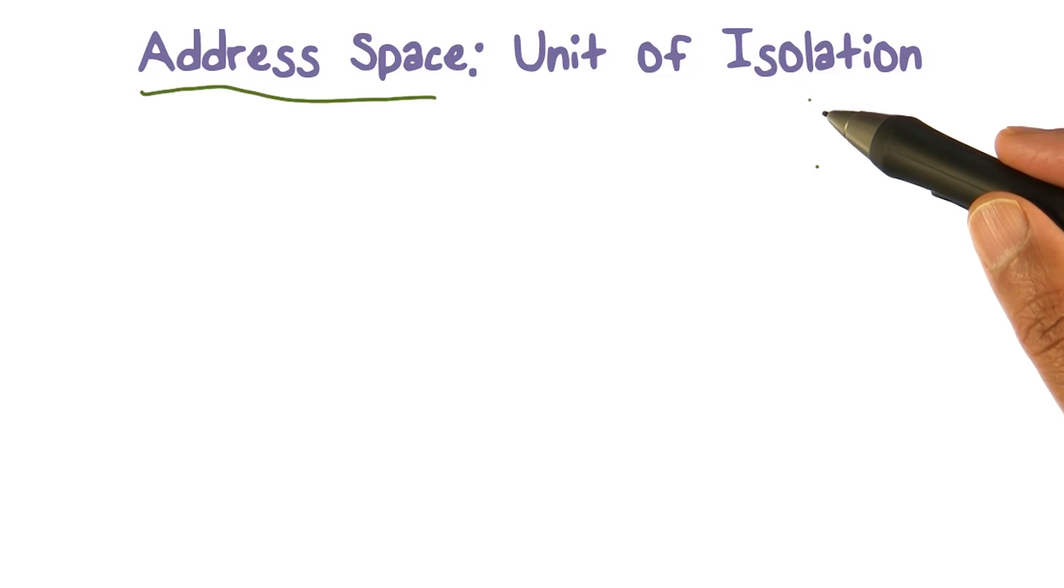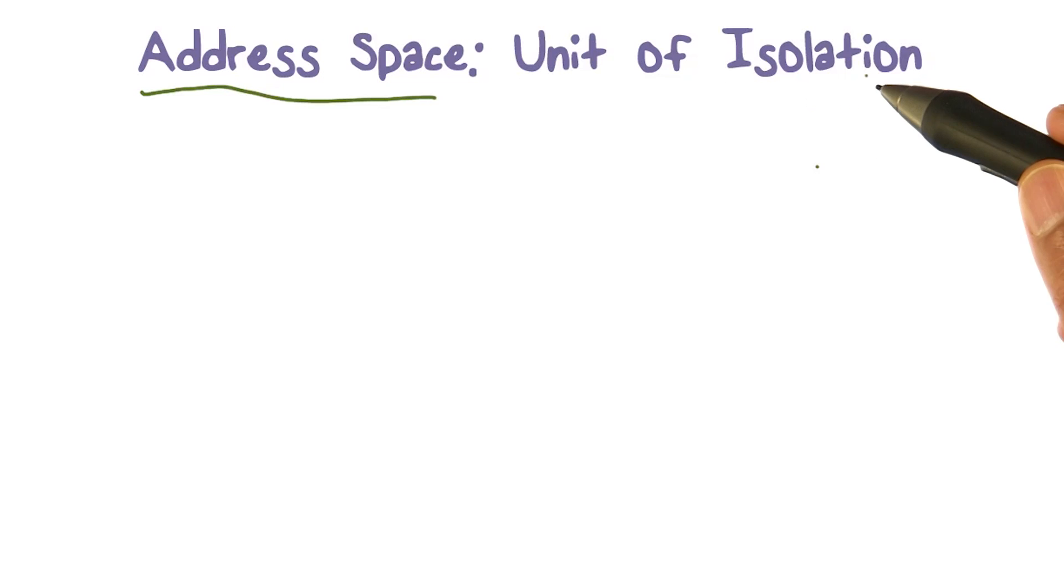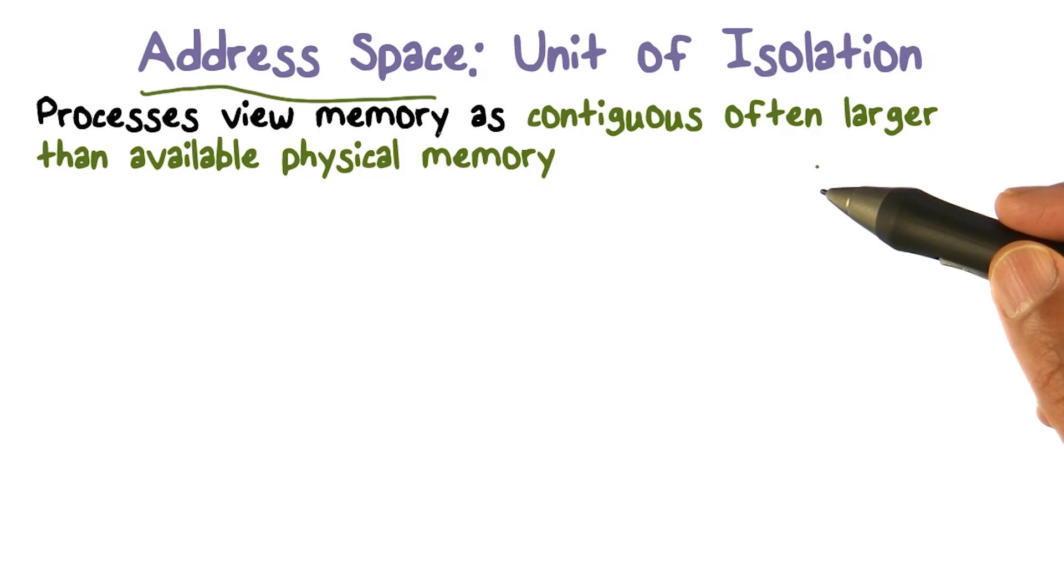When we talk about isolation, we have to dig deeper and think about address spaces. If a process is essentially going to think that it has the memory to itself, it's going to think of this memory as a contiguous set of locations going from some starting address zero to some max. And it's going to think that it has this set of memory locations, not only that are contiguous, but they could even be more than the total memory that we have, physical memory that we have in a computer.